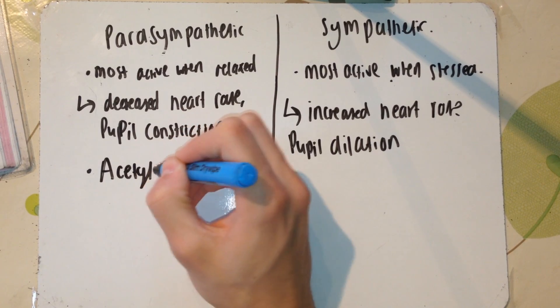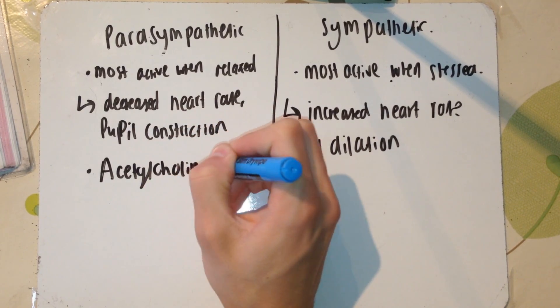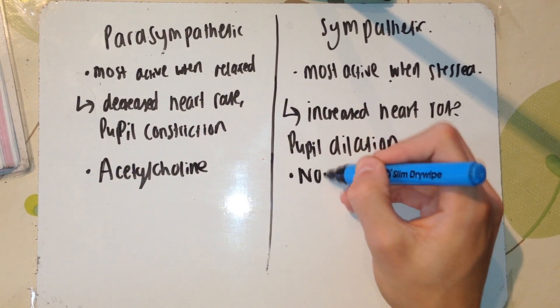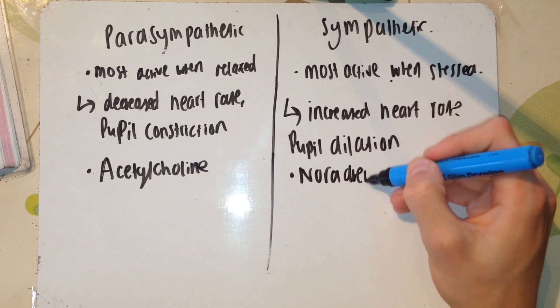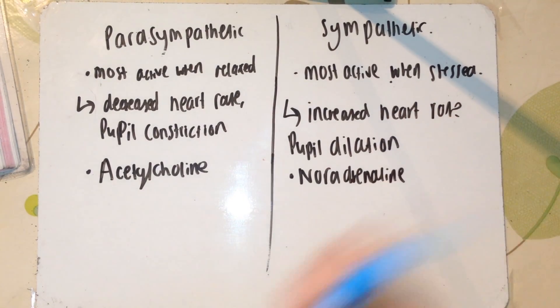If you forget one of these things, if you remember some of the other factors, it can actually help you to remember several other factors and properties of the parasympathetic and sympathetic nervous systems.